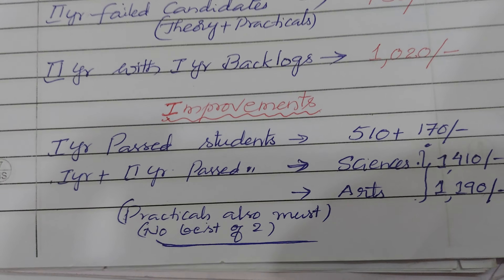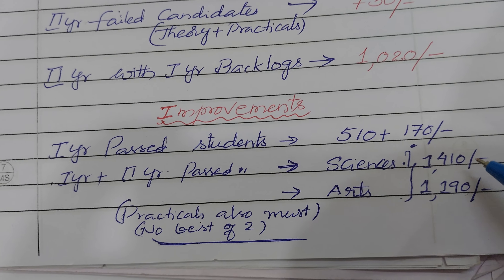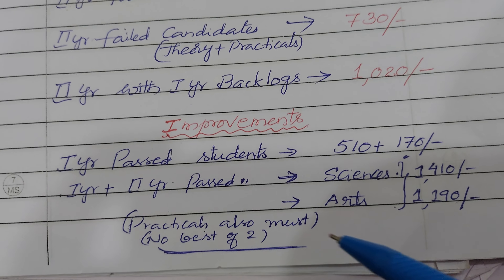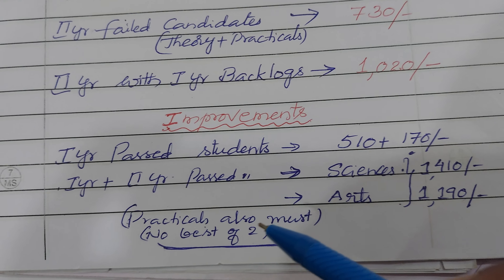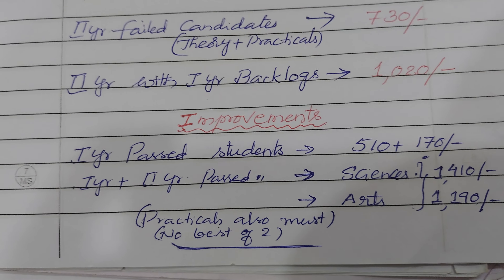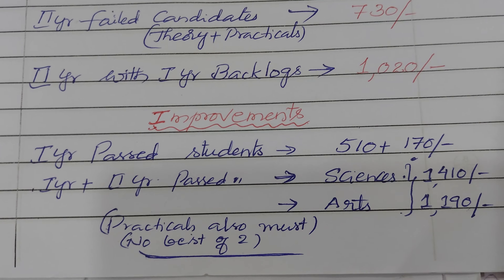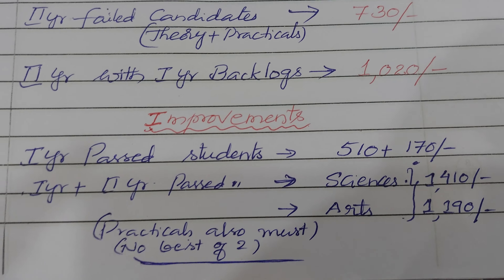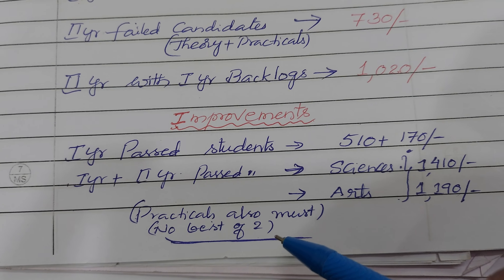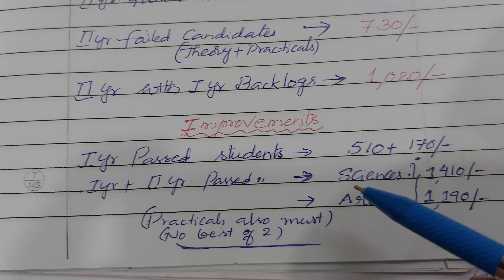For second year past students appearing for improvement examinations, the fee is 1410 rupees for Science stream and 1190 rupees for Arts stream. Practicals are also mandatory for second year improvement. It is very risky — if you fail or get less marks the second time, those second time marks will be considered. There is no best of two provision for second year improvement.